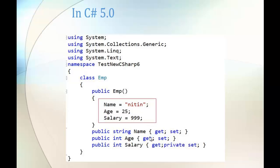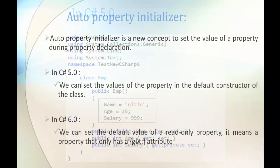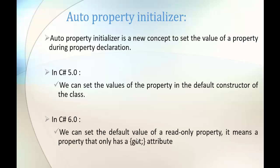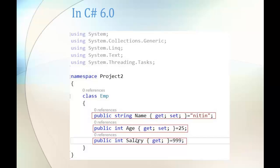But coming to C# version 6, we can set the default value of a read-only property — meaning a property that has only a getter. As you can observe in this slide, if my property has only a get, I can initialize those values directly using the equal-to operator. Name gets a value right there, age gets 25, and salary gets 999.